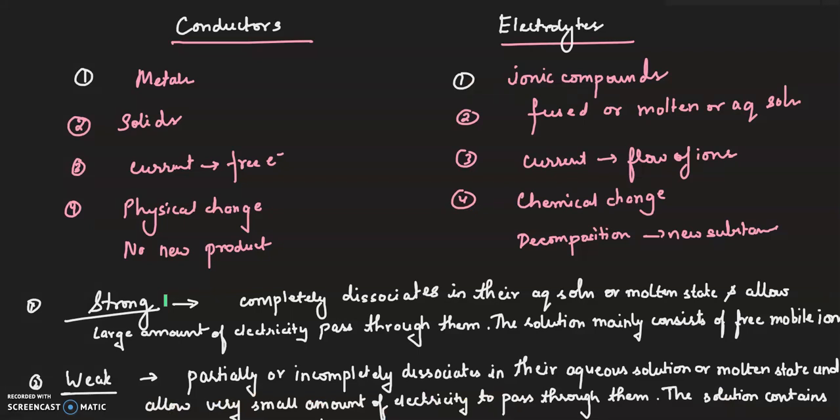When we talk about conductors, they are generally metals. For electrolytes, they are ionic compounds. Conductors are solids, while electrolytes exist in fused or molten or aqueous solution. The passage of electric current is by the flow of free electrons in conductors. And in electrolytes, the passage of electric current is by the flow of ions, and they are discharged at the electrode.